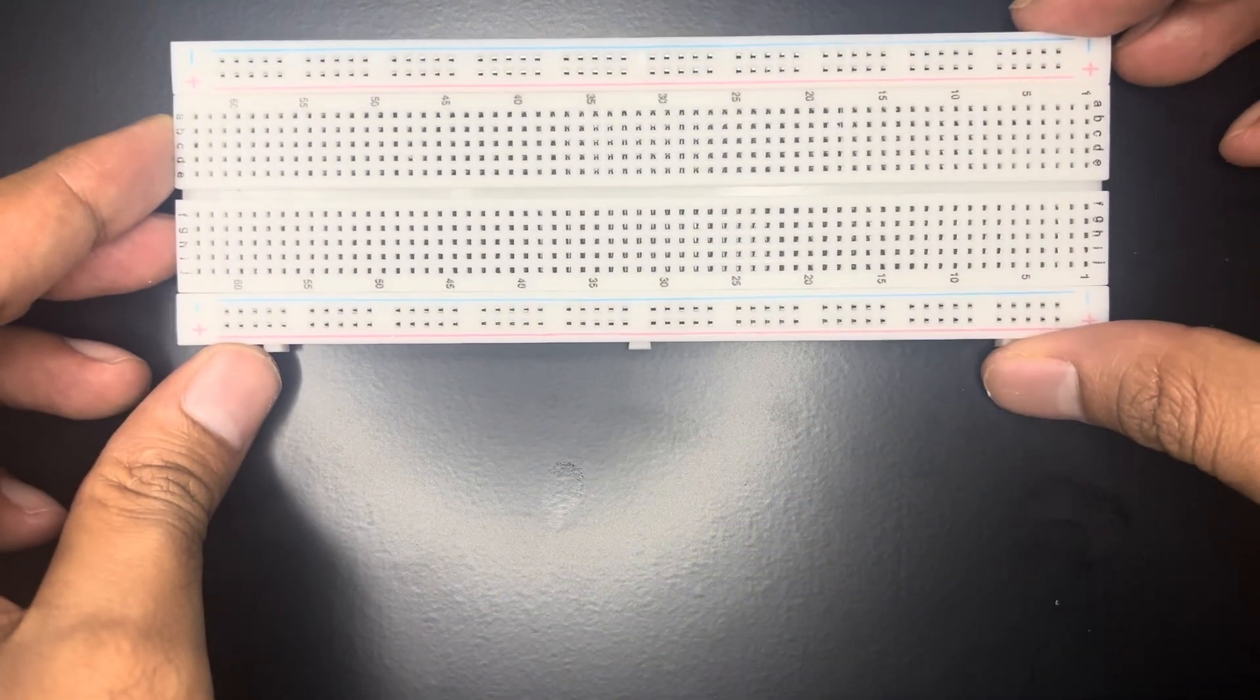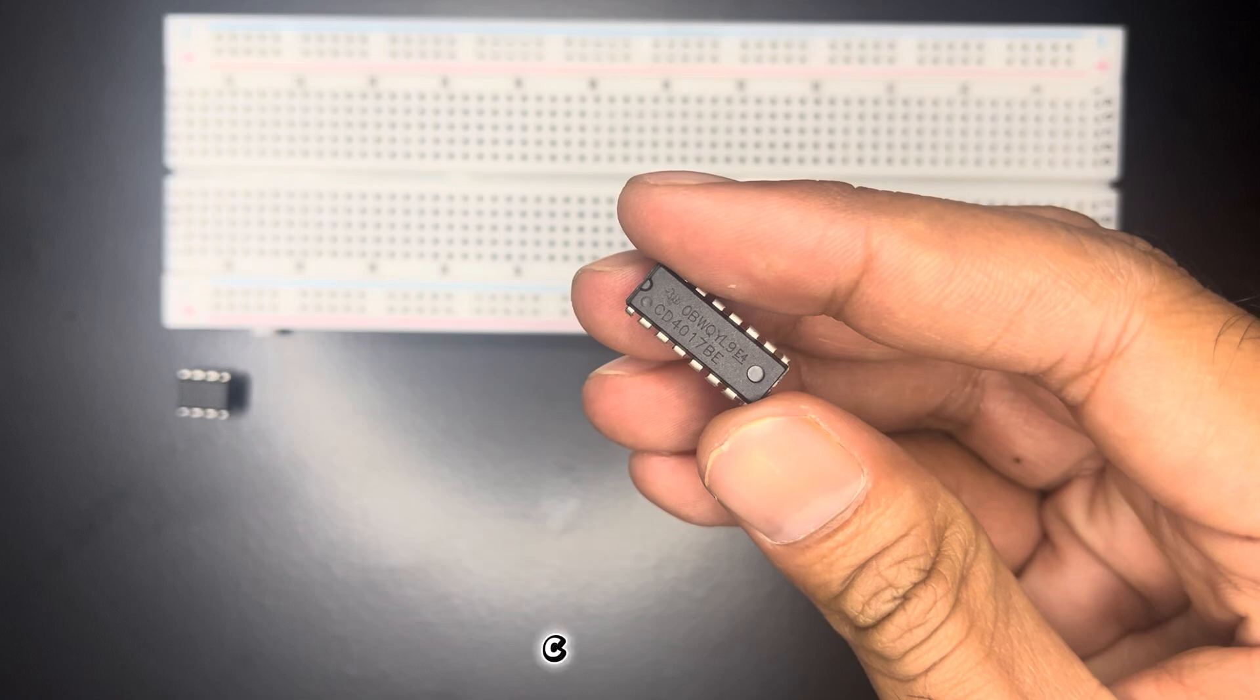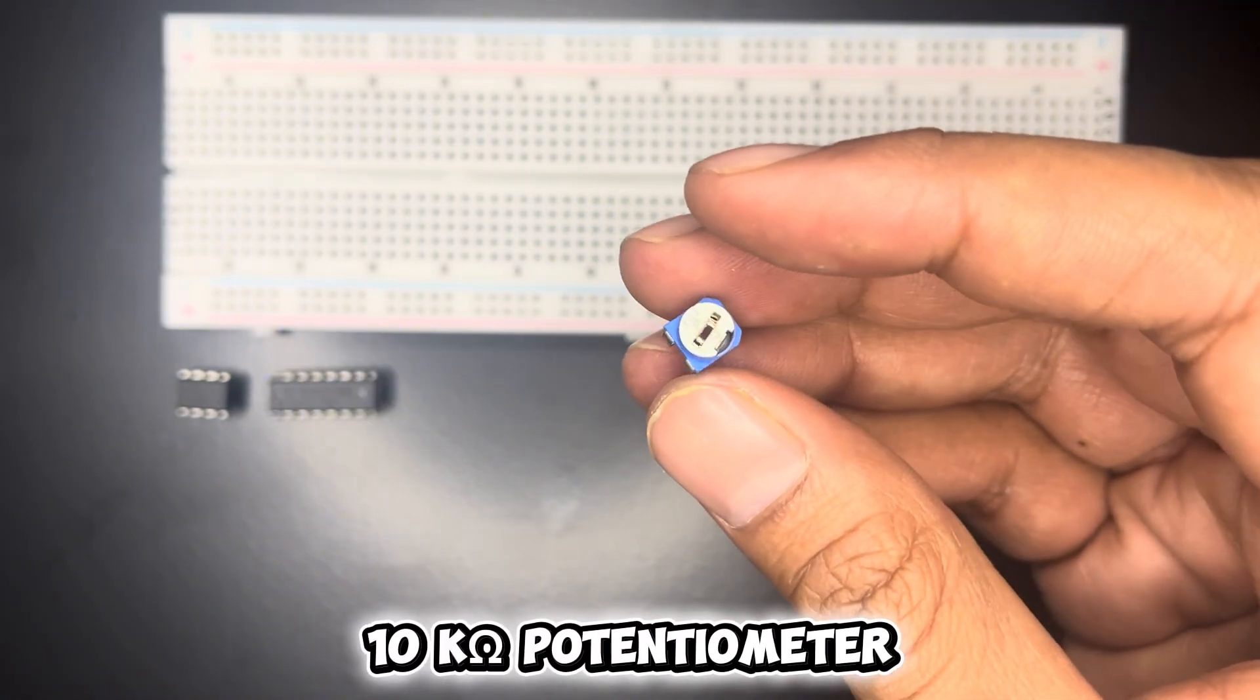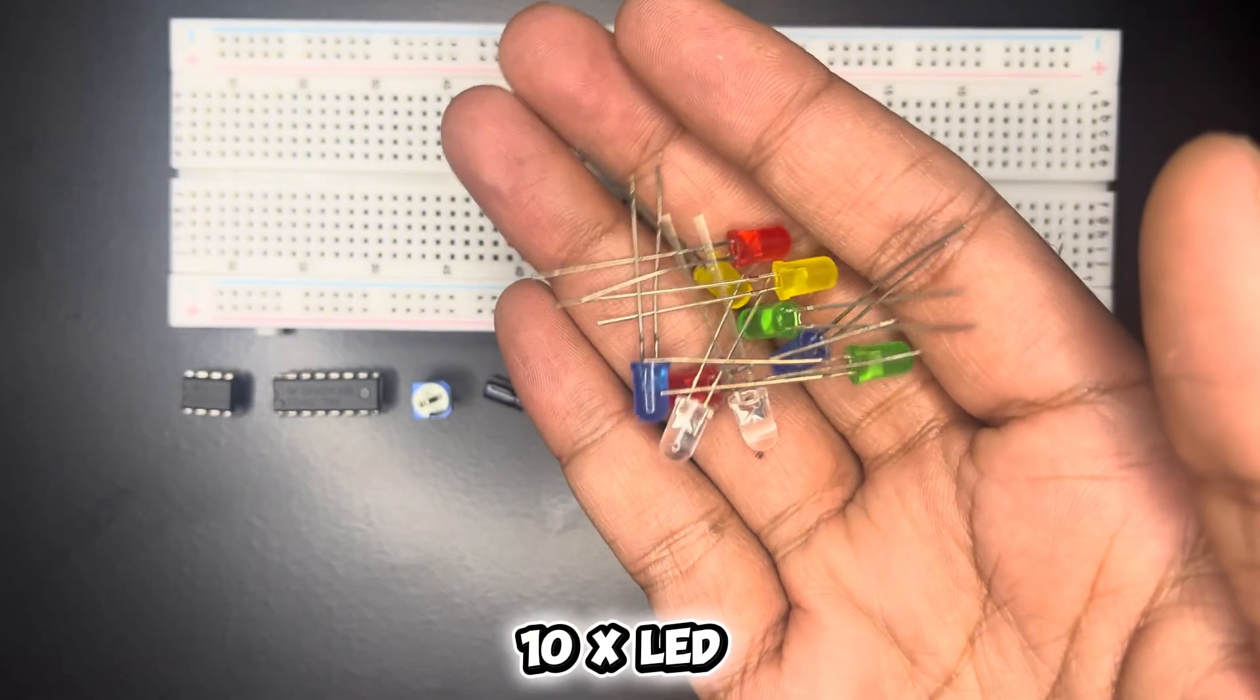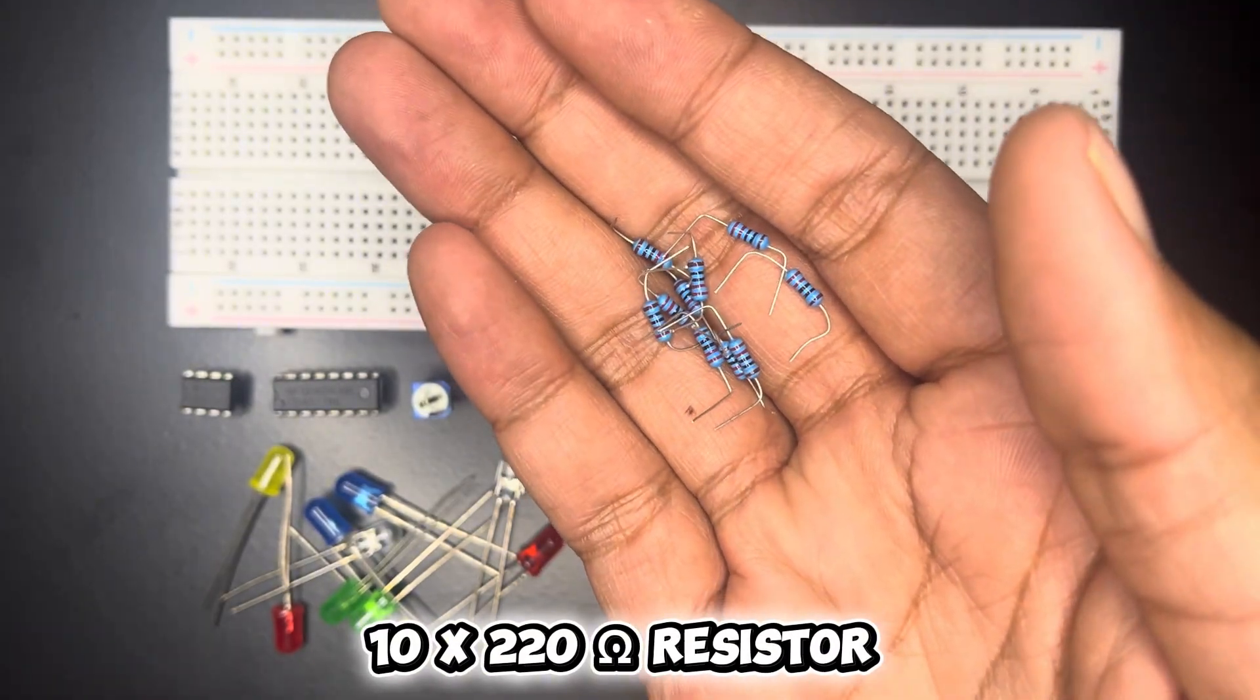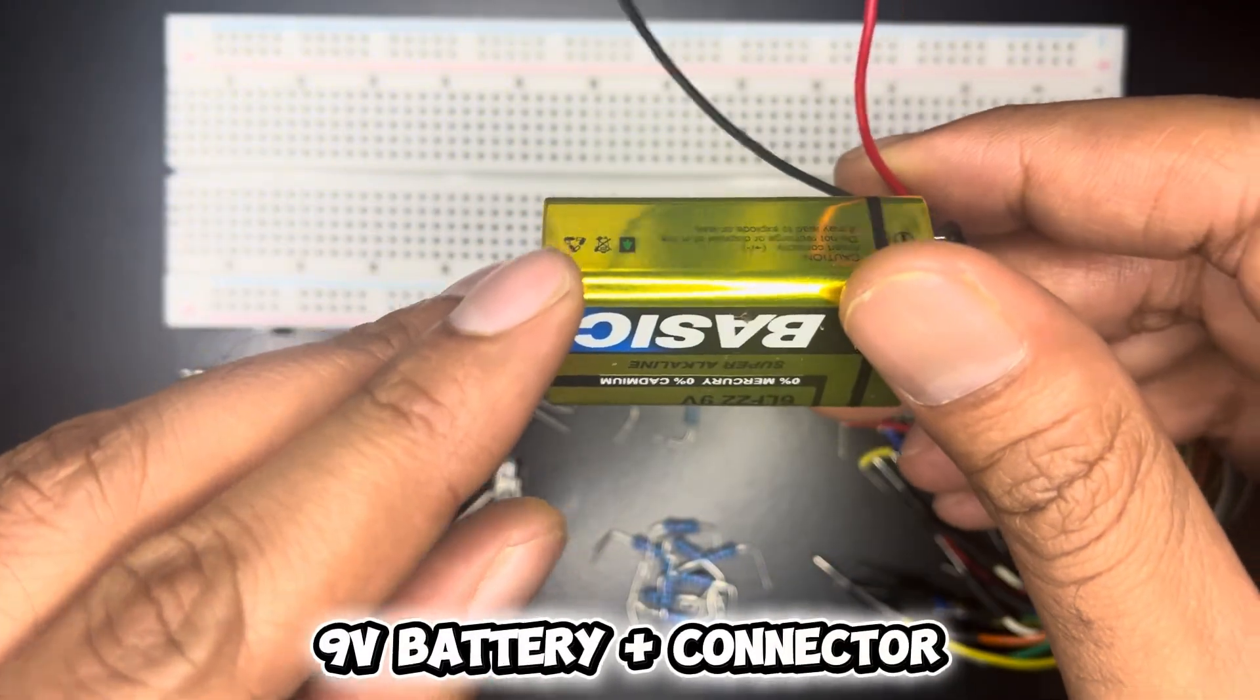Let's see the components we need in this project: a 555 timer, a CD4017 IC, a 10k potentiometer, a 10uF capacitor, one 1k resistor, one 10k resistor, 10 pieces of LEDs, 10 pieces of 220 ohm resistors, some jumper wires, and we need a 9V battery with connector.